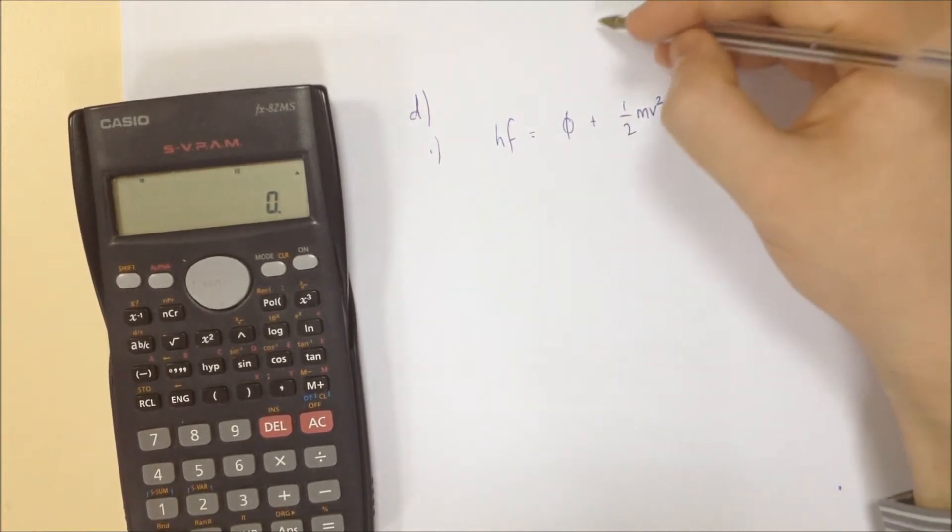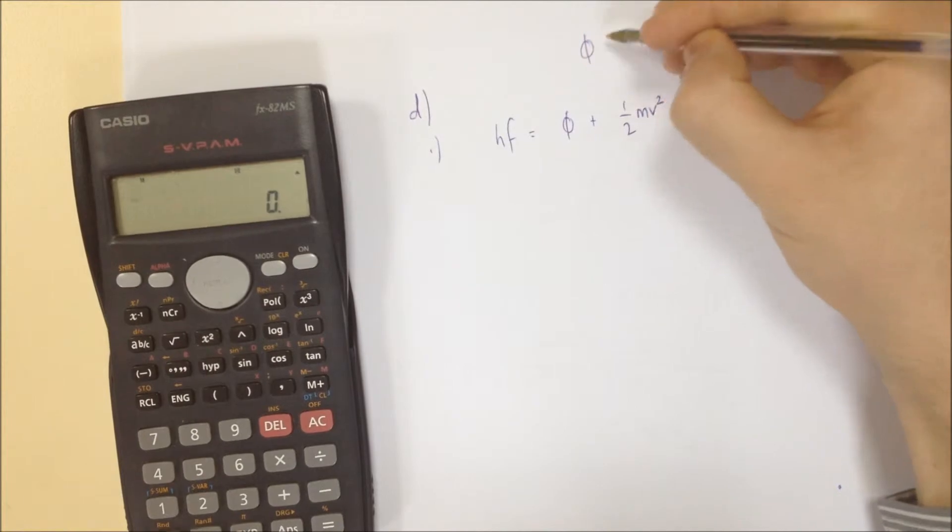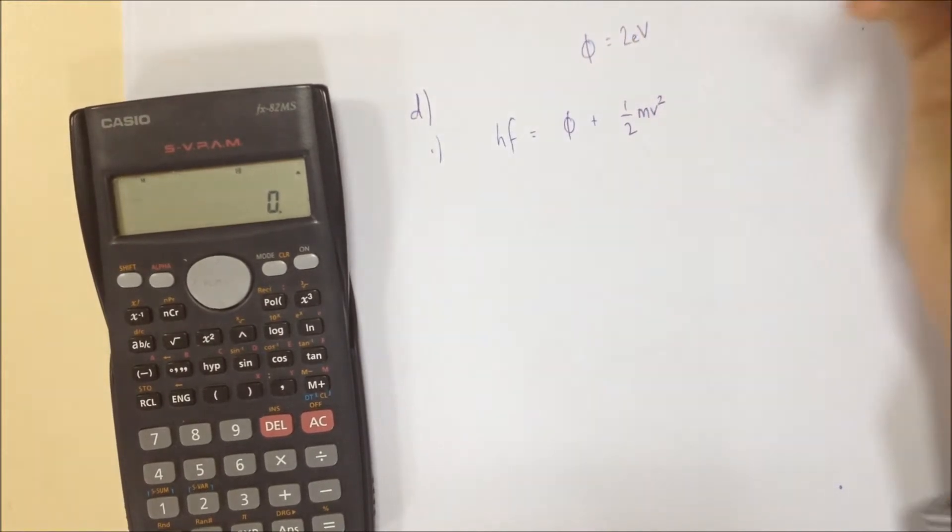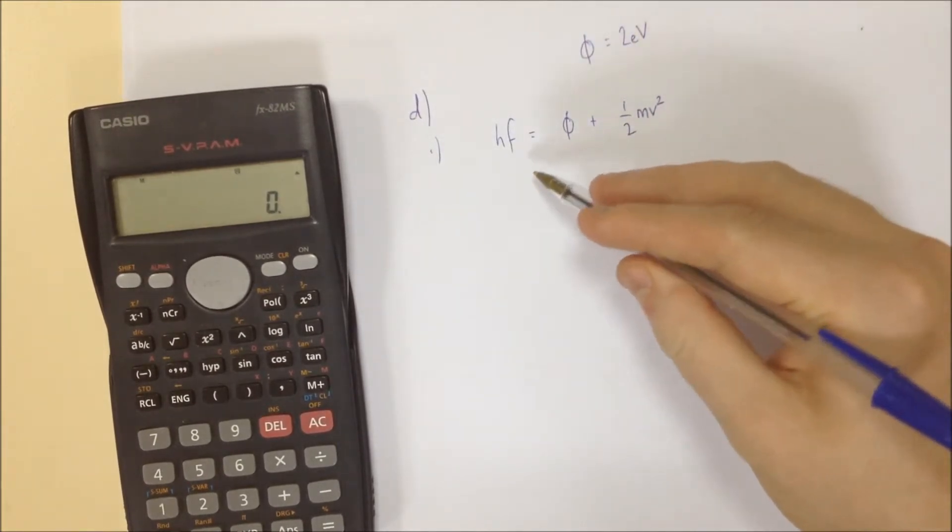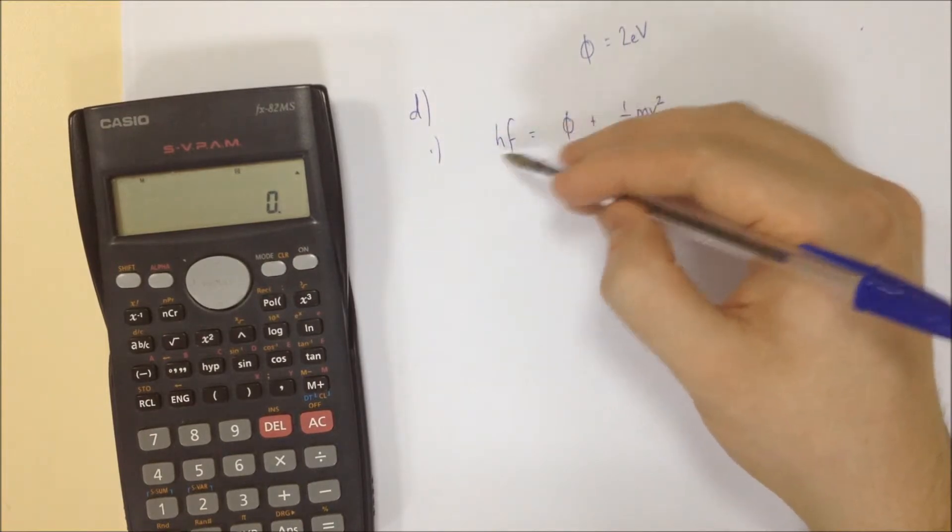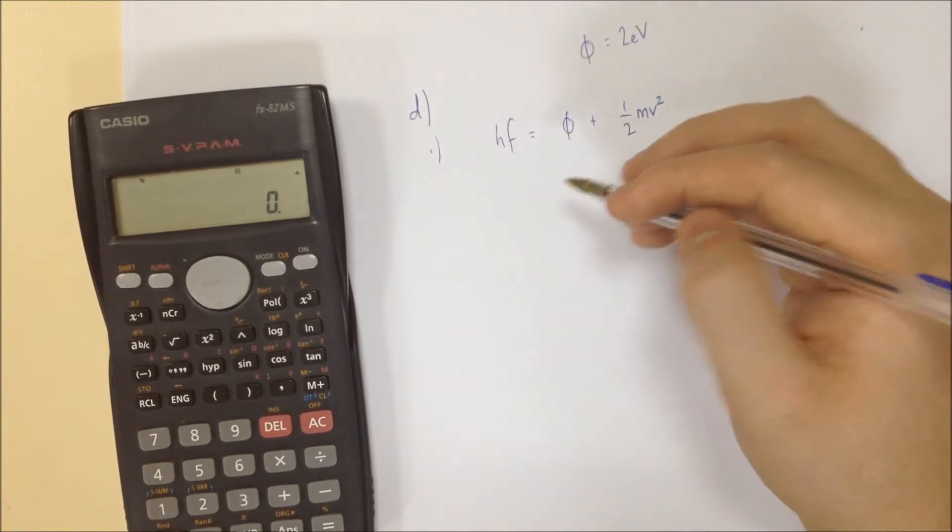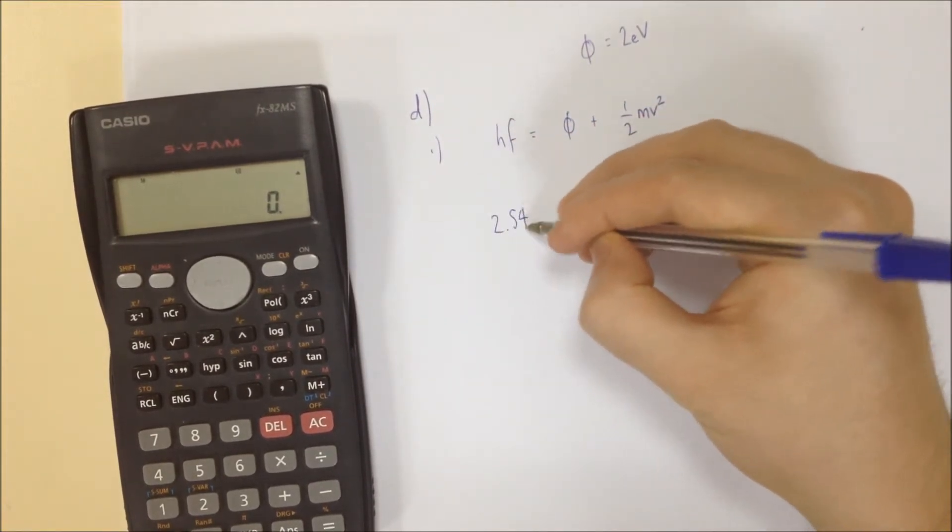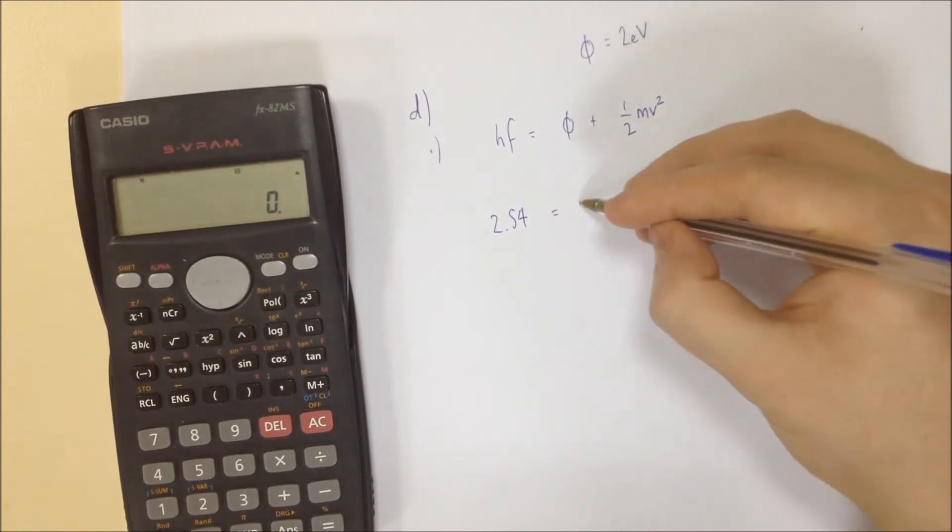Phi was given in the question. It was given as 2 electron volts. So as we're working in electron volts here, we're kind of all good. In fact, we got this was 2.54 electron volts at the end. So we've got 2.54 electron volts equals 2 electron volts.